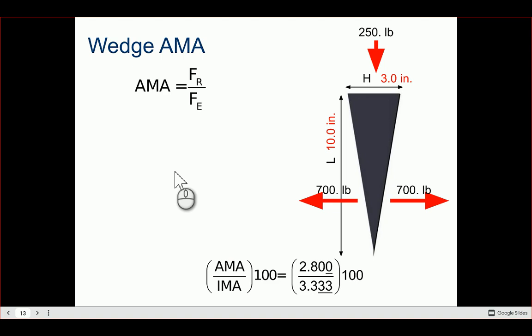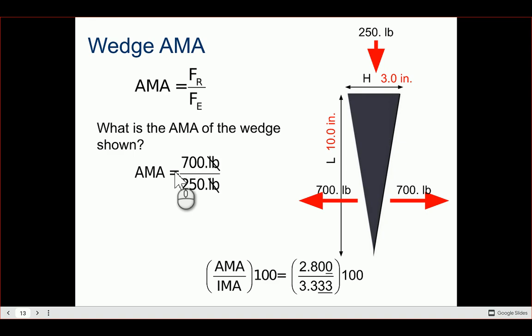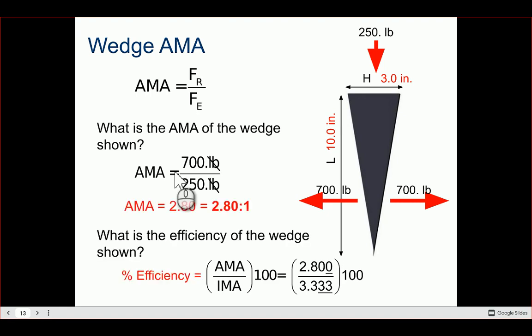For the wedge example: IMA = 10 inches / 3 inches = 3.3 to 1. For AMA, if we apply 250 pounds of effort and the resistance is 700 pounds, AMA = 700 / 250 = 2.8 to 1. Efficiency = AMA / IMA × 100 = 84 percent efficiency for the wedge.